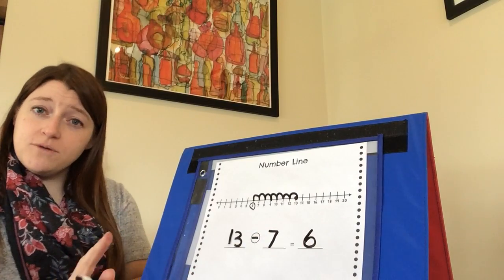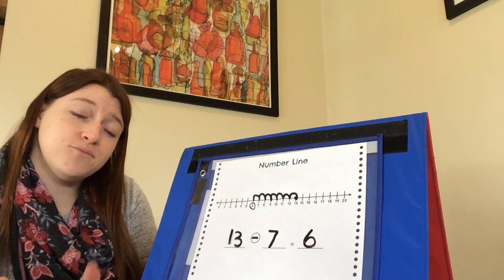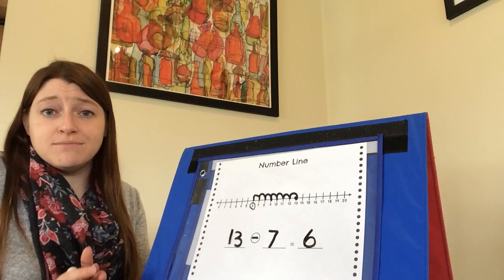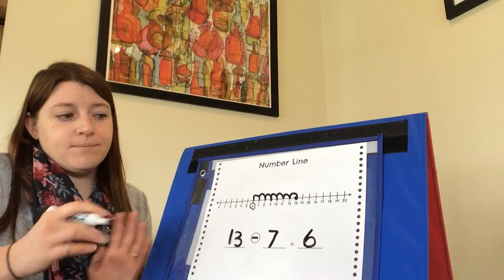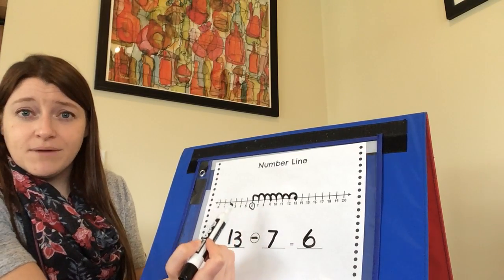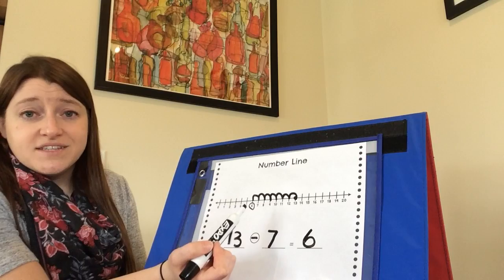Now be careful when you're making your hops, because sometimes if you make your hops too quickly you might make hops that are too big or too small. You might not end on the right number. So make sure every time you make a hop that you end on one of the tick marks that shows where a number is on the number line.